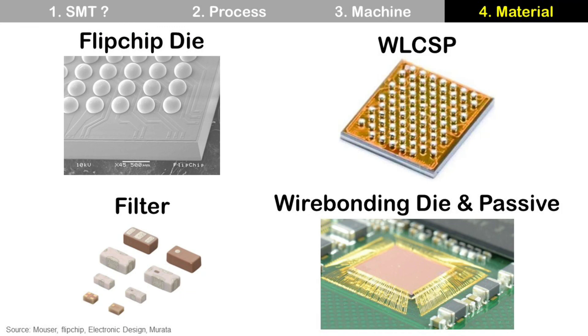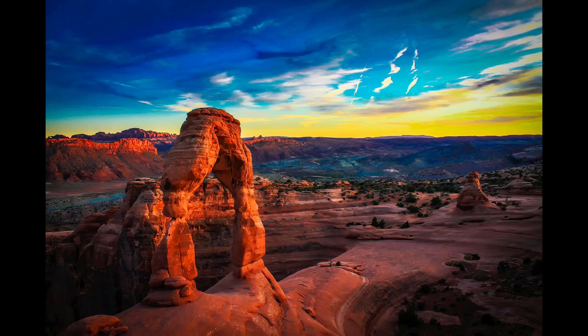For most cases, surface mount devices for SiP are flip chip die, wafer-based CSP, filter, wire bonding die, and passives. Thanks for watching, and have a nice day. Bye-bye.